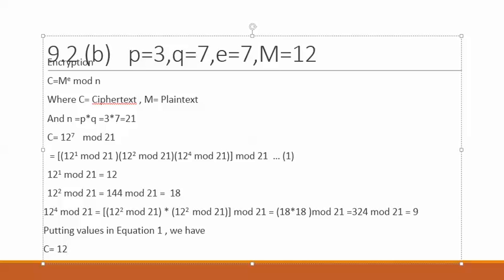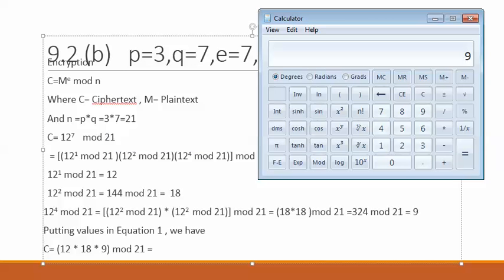12^1 mod 21 is 12, then multiplied by 18, then multiplied by 9, and after this we take mod 21. Let me switch back to the calculator. 12 times 18 times 9 equals 1944, divided by 21. Then subtract 92, then multiply by 21, which gives us 12.